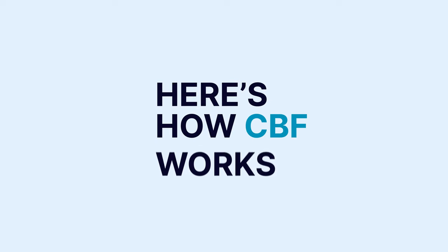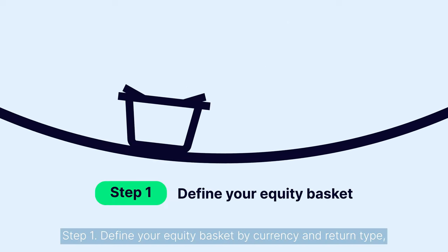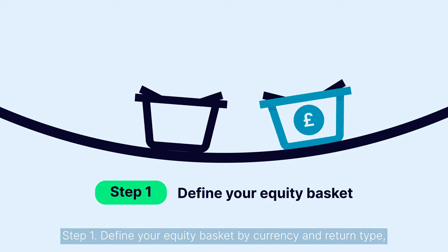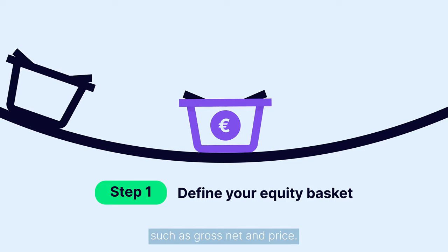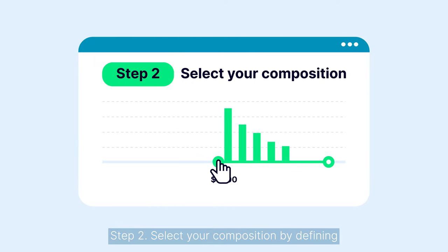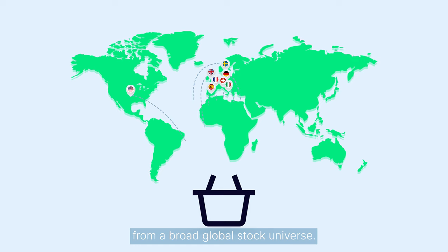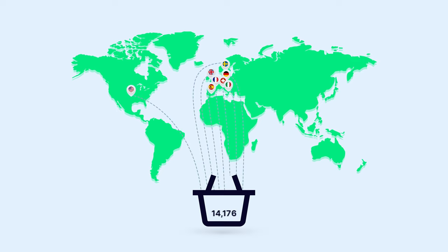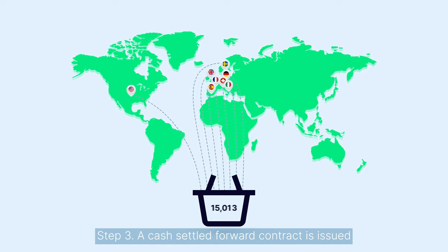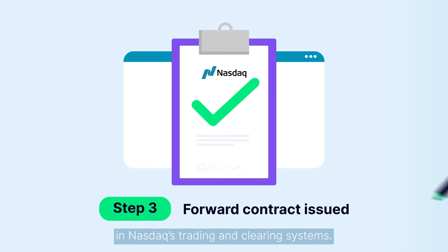Here's how Custom Basket Forwards works. Step 1: Define your equity basket by currency and return type, such as gross, net, and price. Step 2: Select your composition by defining the individual stocks and weights from a broad global stock universe. Step 3: A cash-settled forward contract is issued in NASDAQ's trading and clearing systems.